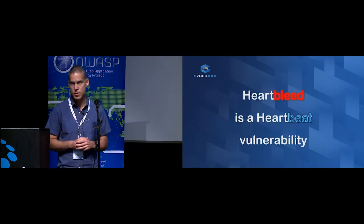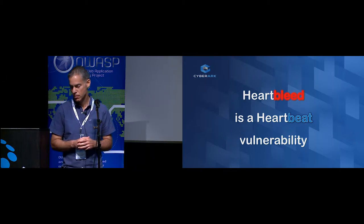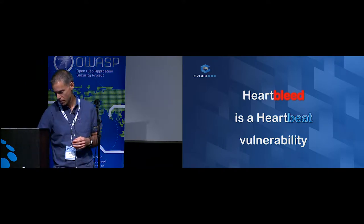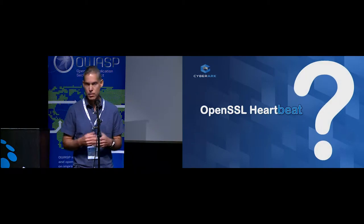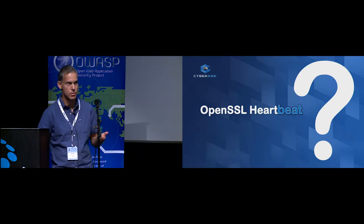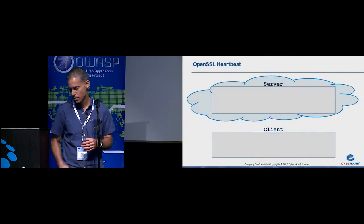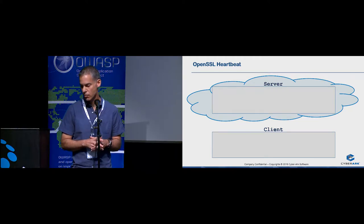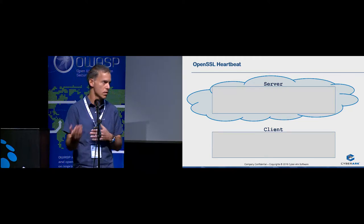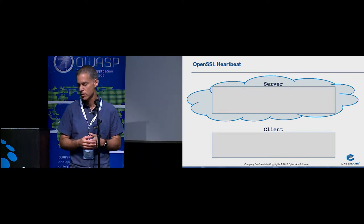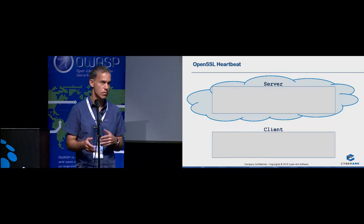We're going to talk a little bit about Heartbleed and understand what it is and how it happened. Heartbleed is a vulnerability in the heartbeat feature of OpenSSL. Heartbeat is basically a way for two servers, or a client and a server, to check if the session is still alive. Sometimes it's also called keep-alive.